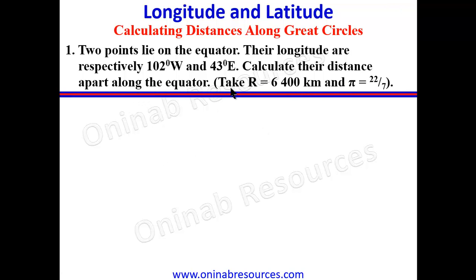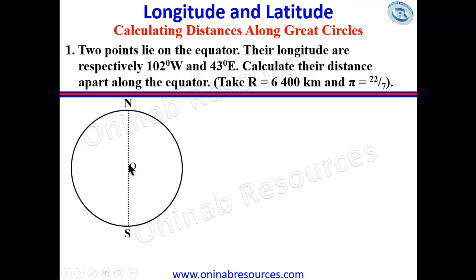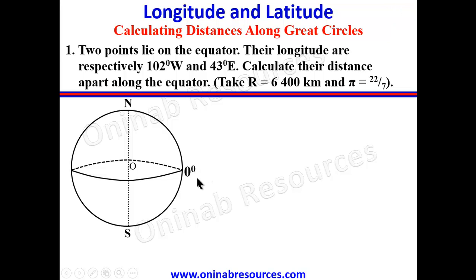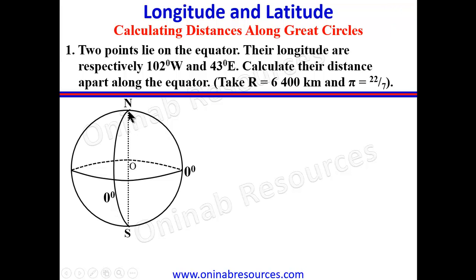It is always advisable to sketch the diagram to locate the two points on the earth's surface. The earth is assumed to be spherical and we identify the north and south pole, the center of the earth, and our equator, which is always zero degrees. We then draw longitude zero degrees, longitude 102 degrees west, and longitude 43 degrees east.